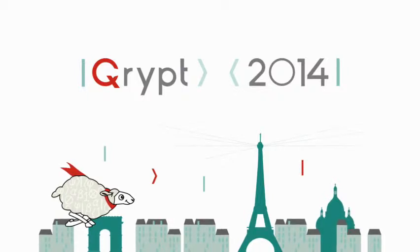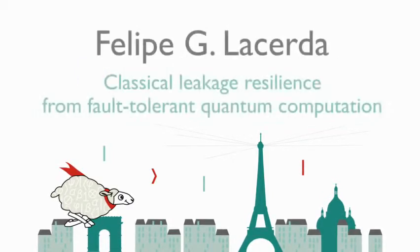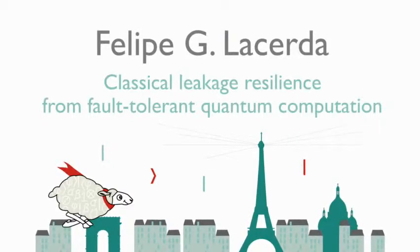Hello everyone. This talk will be about leakage resilience and fault tolerance, which I think everyone here knows at least a little about. So this picture everyone here has seen thousands of times: Alice wants to send a message to Bob, but there's this eavesdropper Eve who has some access to the communication channel, and Alice doesn't want Eve to read her message, so she encrypts it and sends it to Bob.